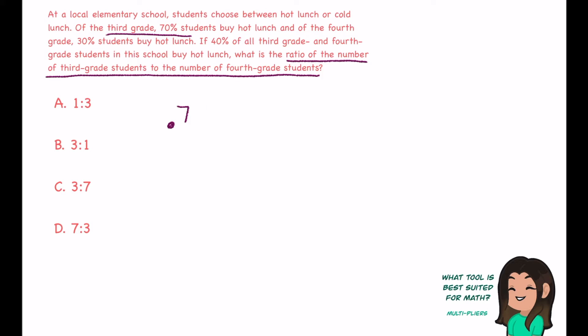Third grade: we have 70% of the students buy hot lunch, so whatever 70% of third grade is, that is the number of students that buy hot lunch. If I add that to the percentage of fourth grade students who buy hot lunch, which is 30%, I should be able to get that 40% of all students that buy hot lunch.